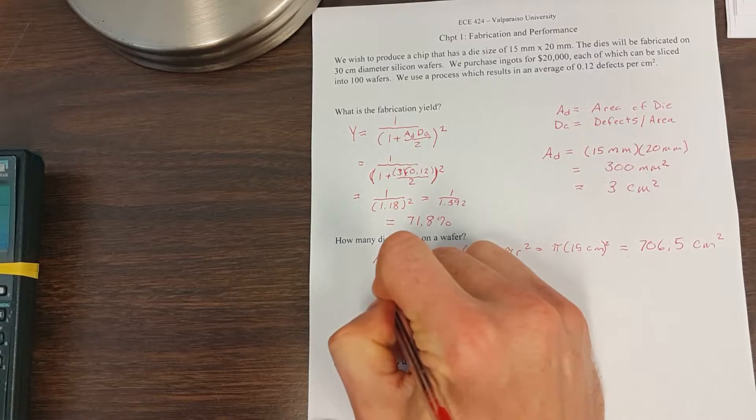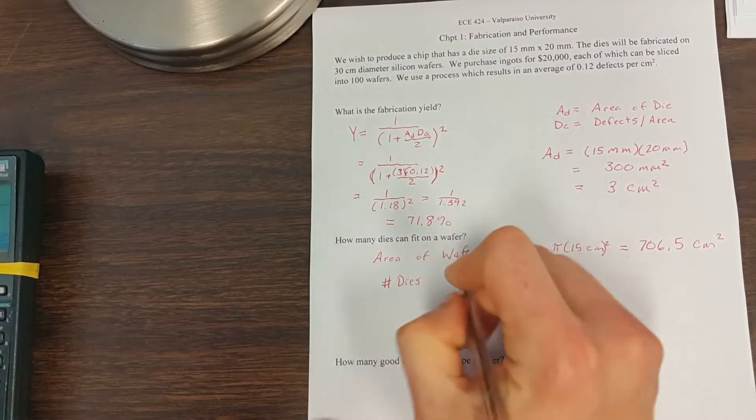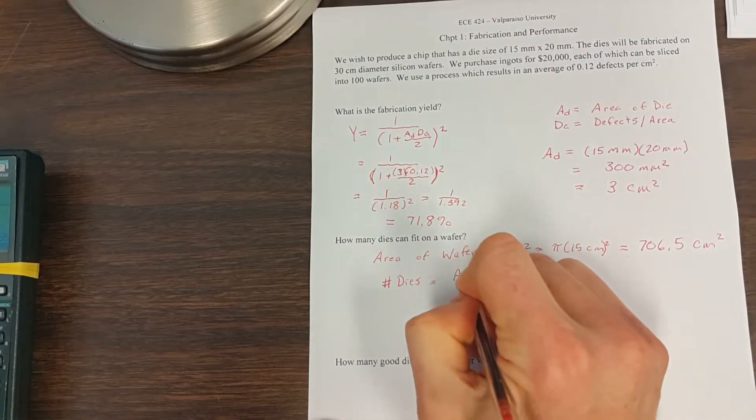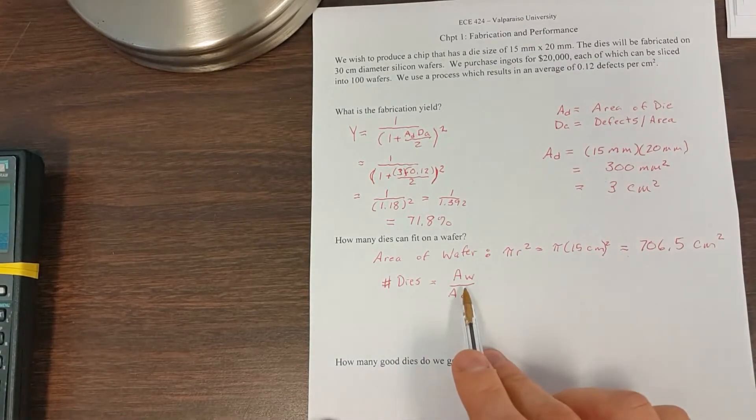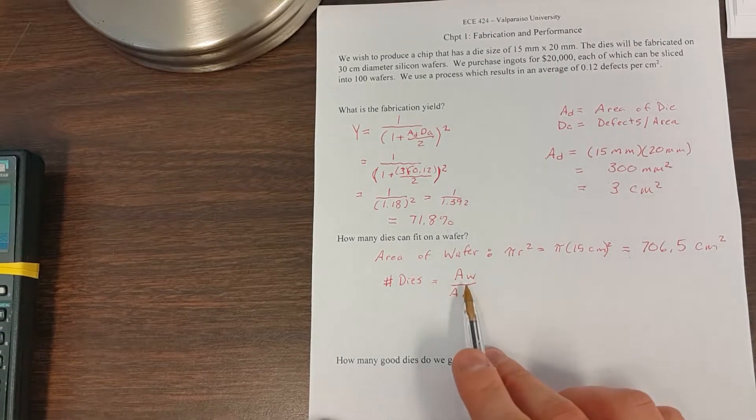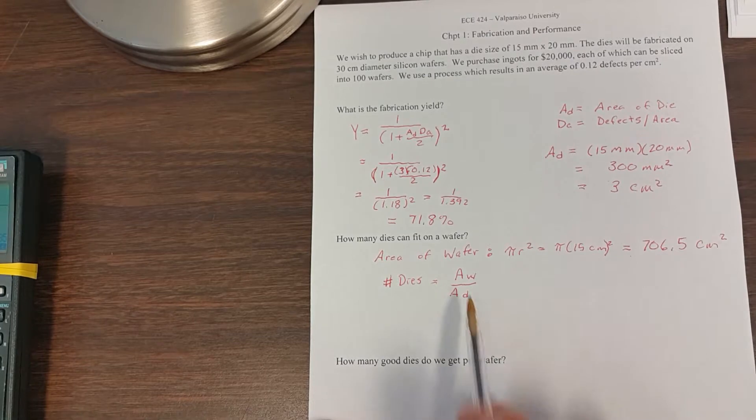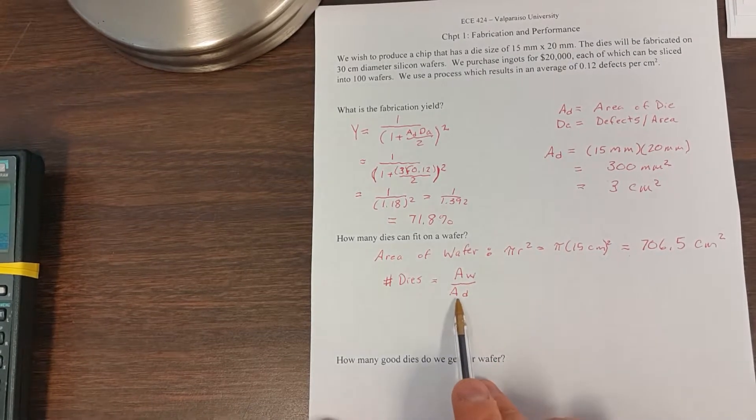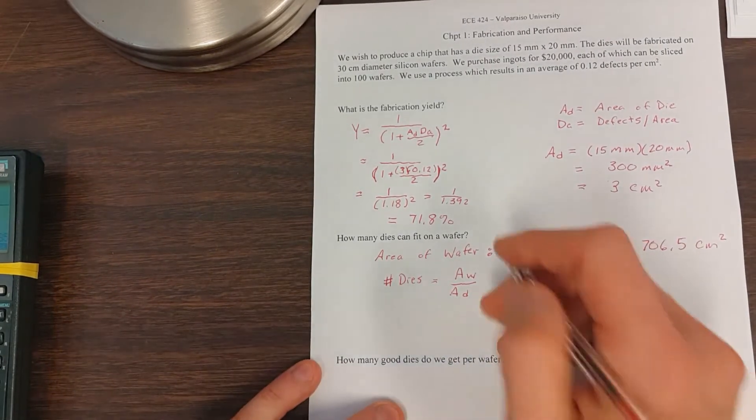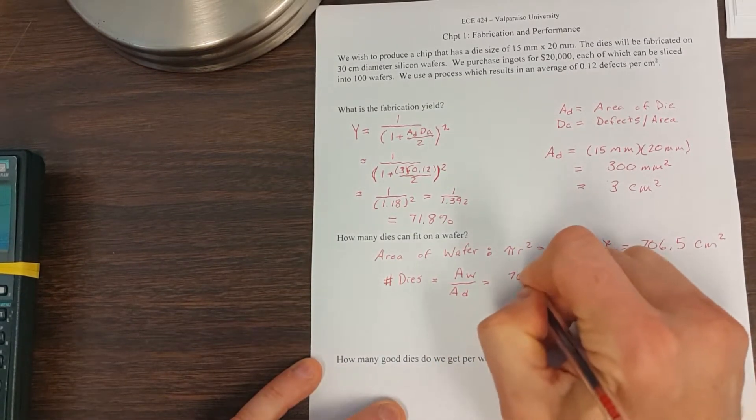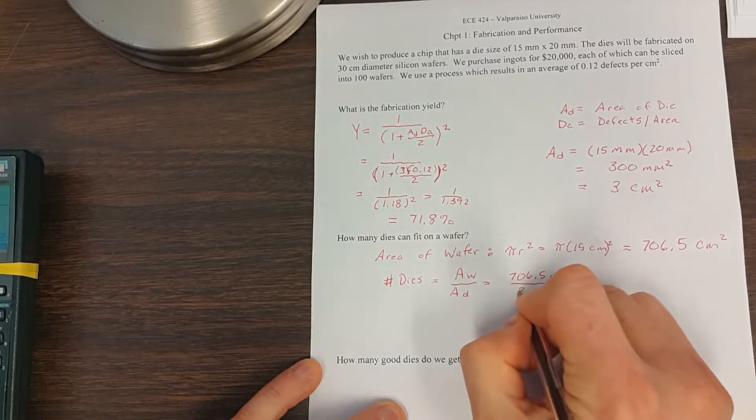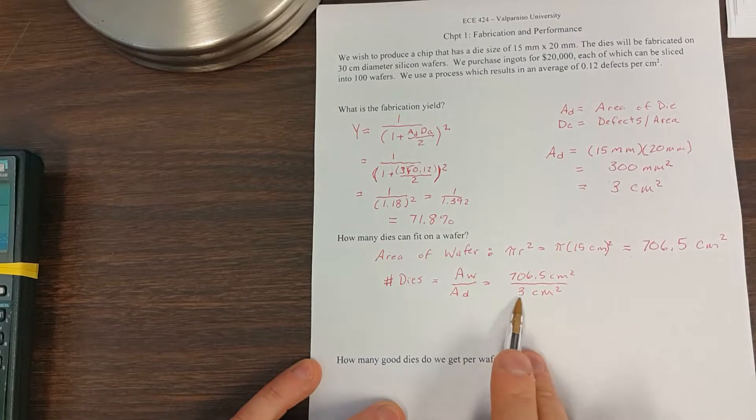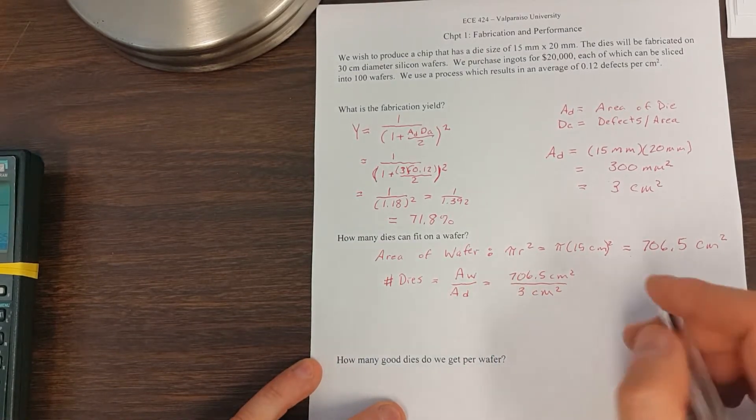So the number of dies then is going to be the area of the wafer divided by the area of the die. Again, this isn't perfect. We've got rectangular dies fitting on a circular wafer, but we're going to ignore the edge effects and assume that we use this approximation here. With that then, we have 706.5 centimeters squared divided by 3 centimeters squared. So every die is 3 centimeters squared, and we've got a total area of 706. So we divide that out,